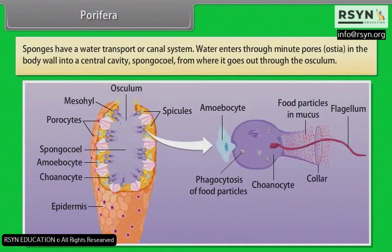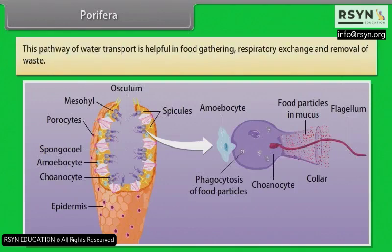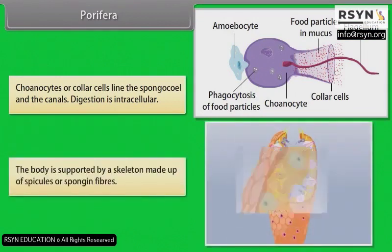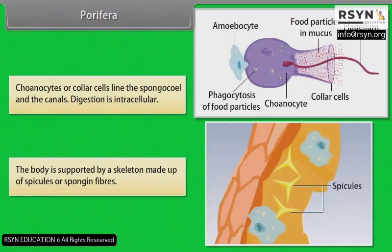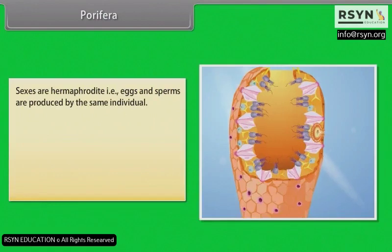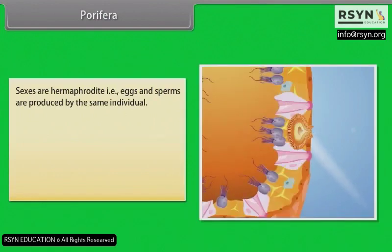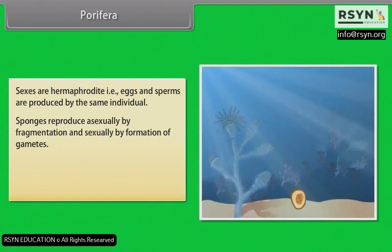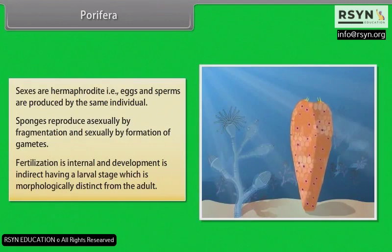Water enters through minute pores known as ostia in the body wall into a central cavity called spongocoel, from where it goes out through the osculum. This pathway of water transport is helpful in food gathering, respiratory exchange and removal of waste. Choanocytes or collar cells line the spongocoel and the canals. Digestion is intracellular. The body is supported by a skeleton made up of spicules and spongin fibers. Sexes are hermaphrodite — eggs and sperms are produced by the same individual. Sponges reproduce asexually by fragmentation and sexually by formation of gametes. Fertilization is internal and development is indirect, having a larval stage which is morphologically distinct from the adult.